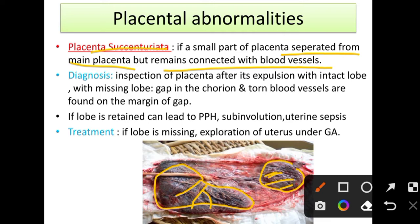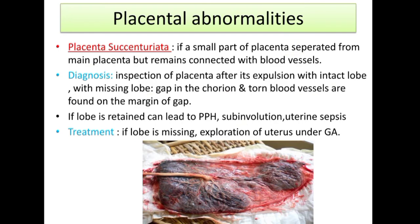For diagnosis: when the placenta is delivered and examined, if the lobe is intact it confirms succenturiata. If the lobe is missing, we can see a gap in the chorion and torn blood vessels at the margins. If the lobe is retained inside the mother, complications include PPH, sub-involution, and uterine sepsis. Treatment: if the lobe is missing, we explore the uterus under general anesthesia.